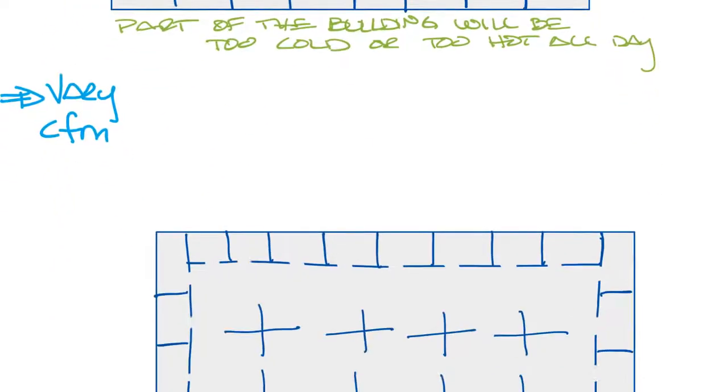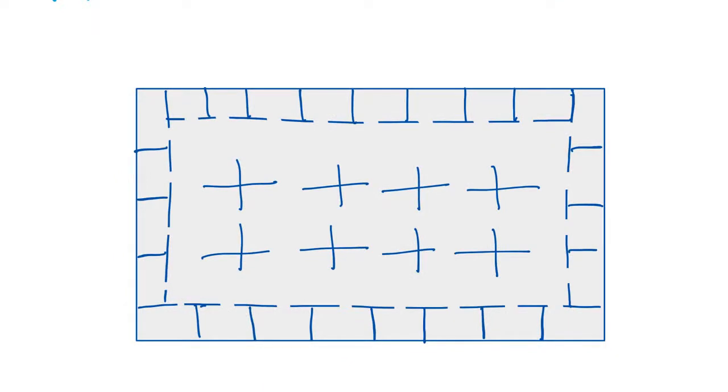Now let's look at the VAV system. In the 1970s, buildings were all constant air volume, but with the energy crisis of the 70s, we needed a way to reduce the energy usage and provide comfort to everyone in the building. VAV systems use VAV boxes to create zones in the building and each zone could control its own comfort.